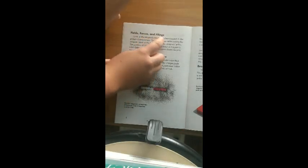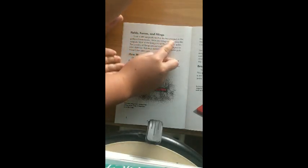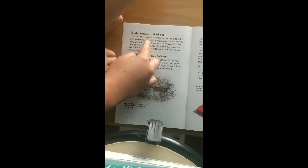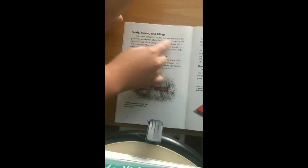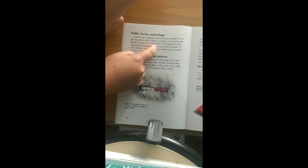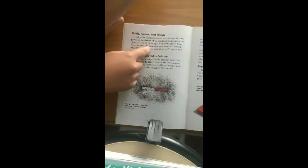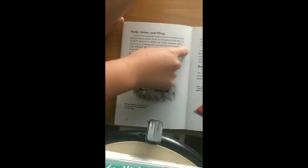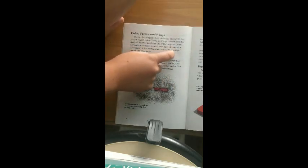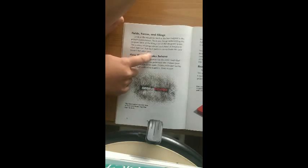Field's forces and filings. Look at the magnetic field of the bar magnet in the picture shown below. There are filings surrounding the magnet. Most of the filings are at the magnet's poles. The pattern of filings around each kind of magnet is a bit different. But each pattern curves from one pole toward the other pole.